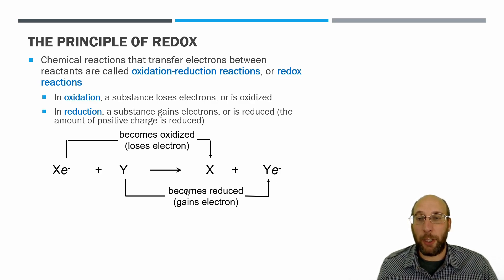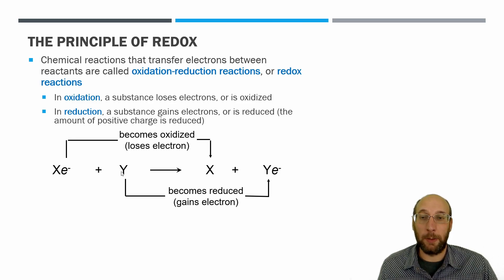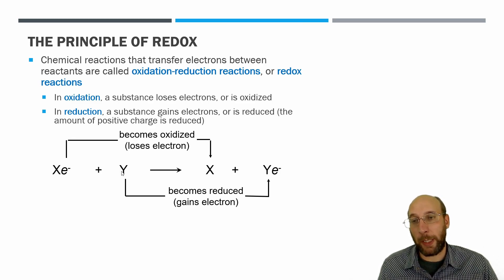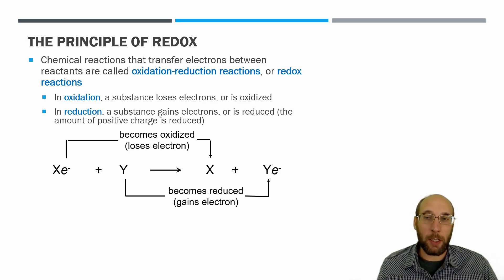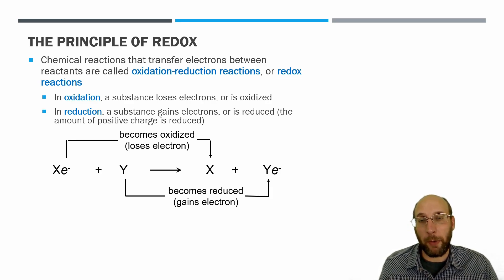In every reaction, if there is a loss of an electron, that electron gets transferred to another reactant. That's why we call these redox reactions, or oxidation-reduction reactions. Now oxidation and reduction can be hard terms to remember, so there are a couple of ways to help.